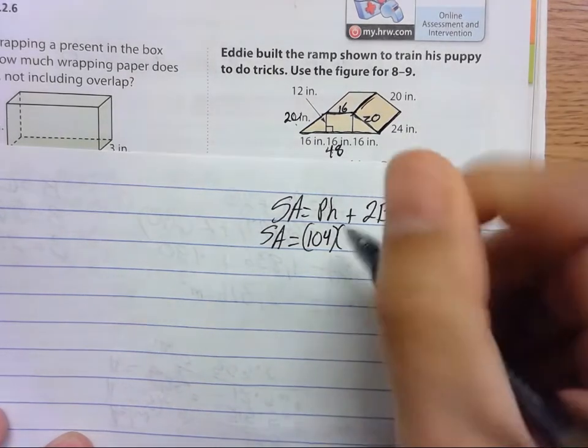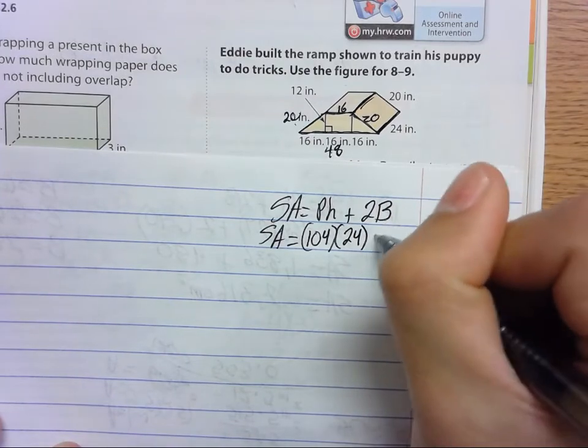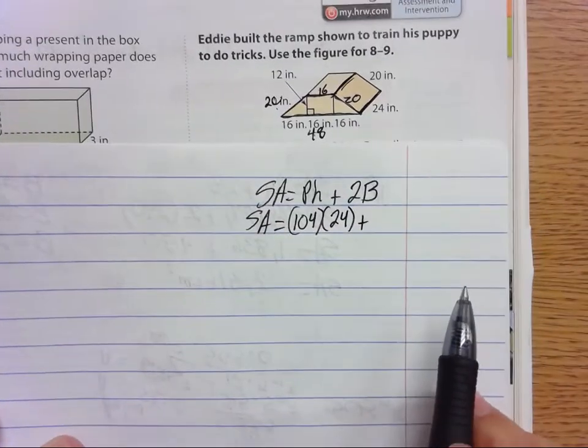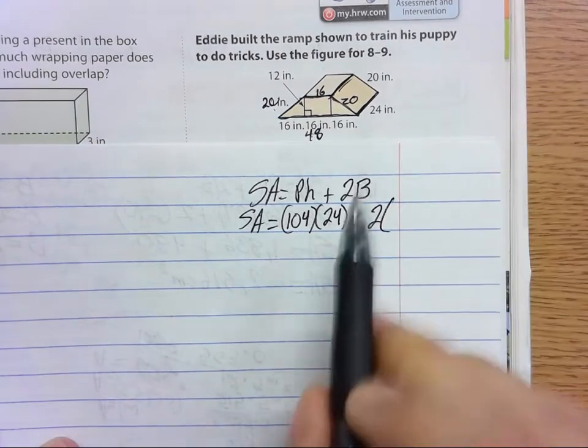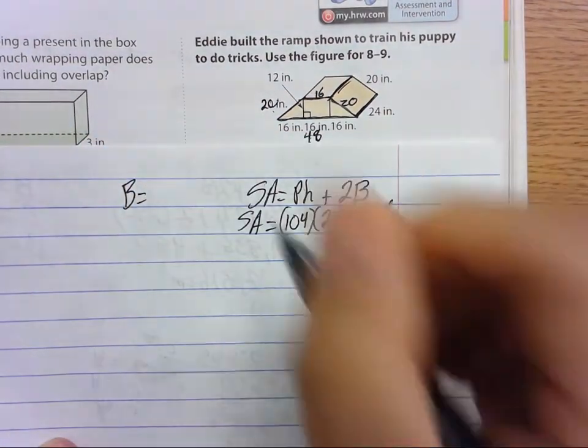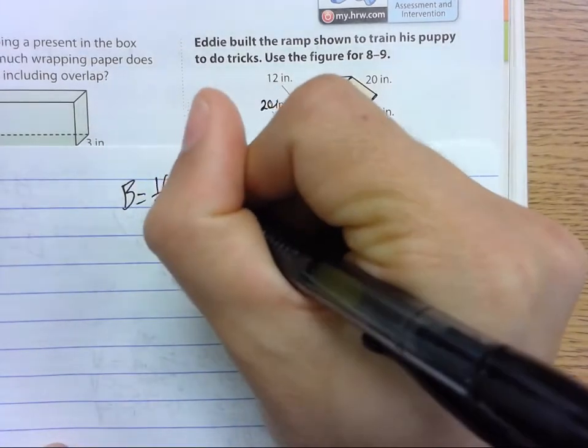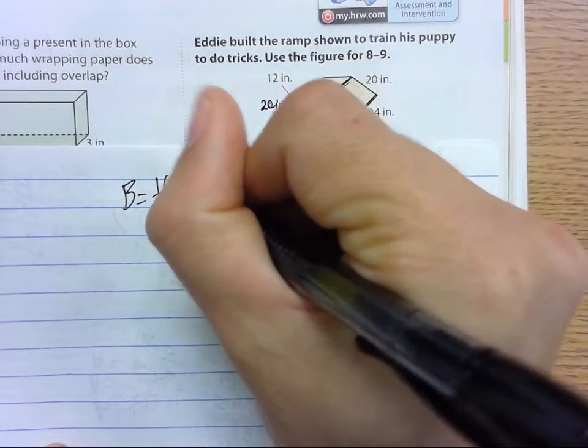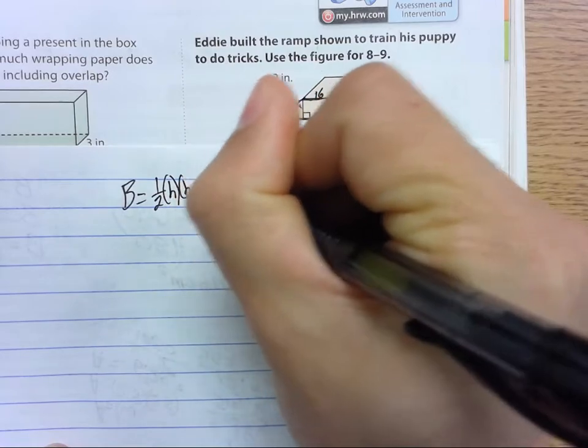And then we need to add two times area of the base. Well, our base is a trapezoid, so half of the height times base 1 plus base 2.